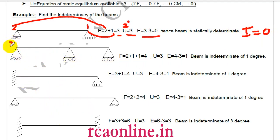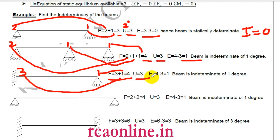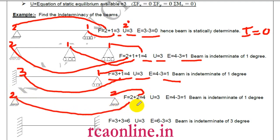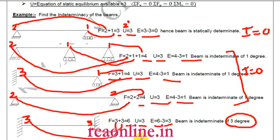For the next example: f equals 2 plus 1 plus 1 equals 4, u is 3, so E equals 1. Another case: fixed (3) plus roller (1) gives f equals 4, u equals 3, E equals 1. Another: two hinges give f equals 4, u equals 3, E equals 1. In all these, I equals zero as no closed loops form. For two fixed supports: f equals 6, u equals 3, E equals 3.